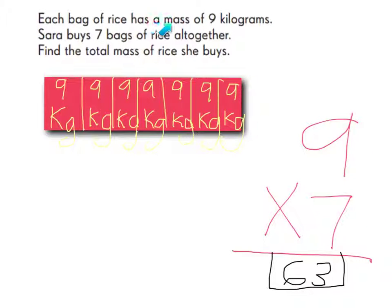Each bag of rice has a mass of 9 kilograms. Sara buys seven bags of rice altogether. Find the total mass of rice she buys. So 9 times 7 equals 63.